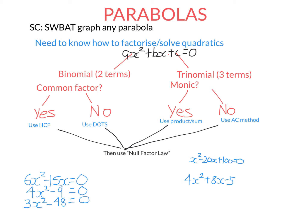They do share a common factor of 3x. 3 goes into both 6 and 15, and we also have x as a common factor. So 3x out the front. What do I times by 3x to get 6x-squared? That's 2x. What do I times by 3x to get negative 15x? That's negative 5.